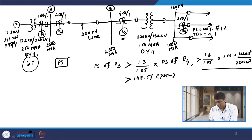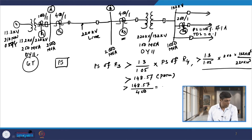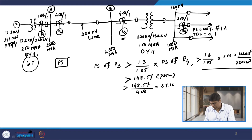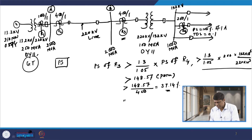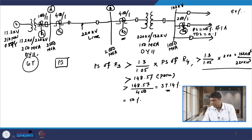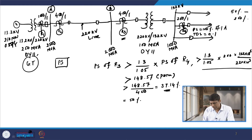Converting to the secondary side of relay R3 by dividing by the CT ratio of 400, the value comes out to approximately 37.14 percent. Based on this, and given the setting range from 50 to 200 percent in steps of 25 percent, the next higher available setting beyond 37.14 percent is 50 percent.